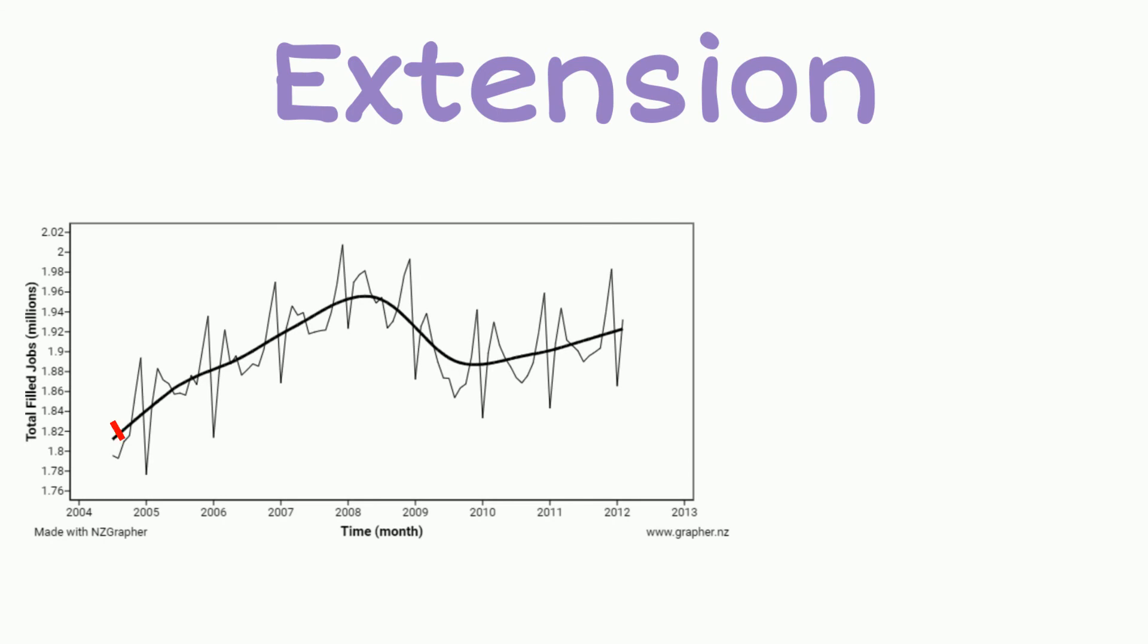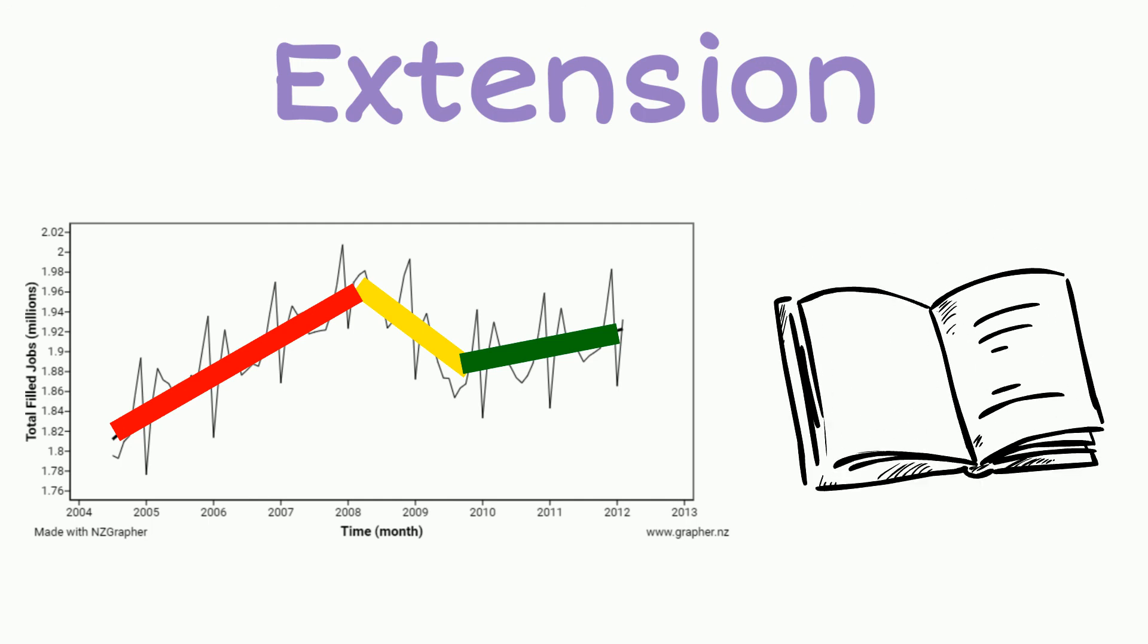So further extension on this is to be able to go and calculate the gradient for each of these sections separately. And in addition to that, connect some research and tell me the story of what is happening in the country that may have caused this change in trend into these three sections.